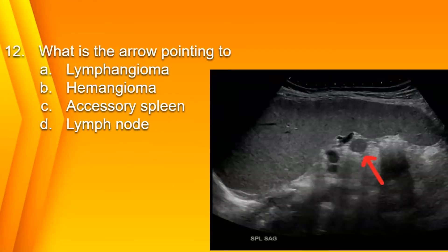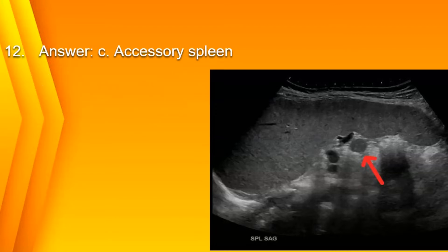Sacral dimple. Number 12: What is the arrow pointing to? A. Lymphangioma, B. Hemangioma, C. Accessory spleen, or D. Lymph node. The answer is C. Accessory spleen, also known as splenule or splenunculus.